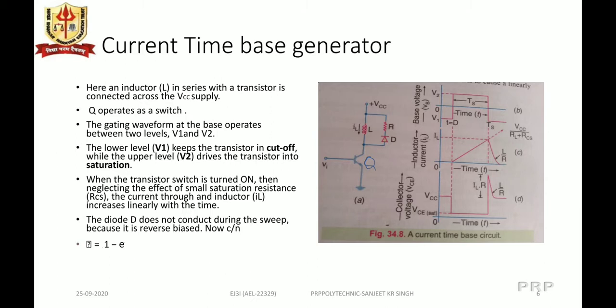The lower level V1 keeps the transistor in the cutoff state, whereas the upper voltage level V2 drives the transistor into saturation. When the transistor switch is turned ON, neglecting the small saturation resistance RCS, the current through the inductor IL increases linearly with time up to the sweep time TS.